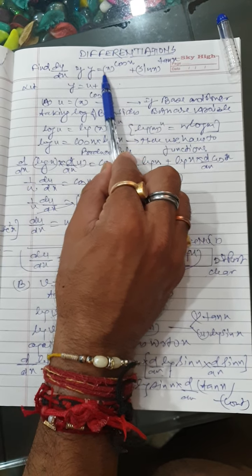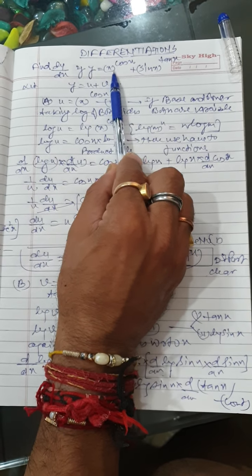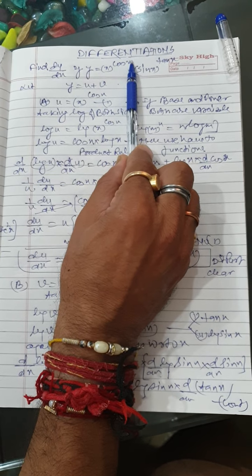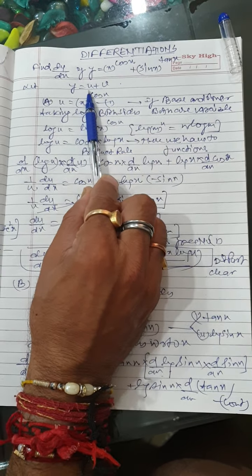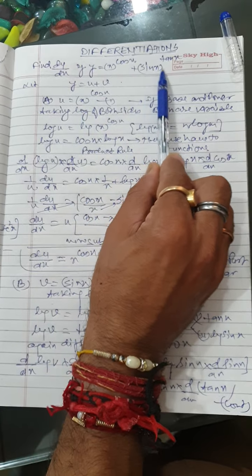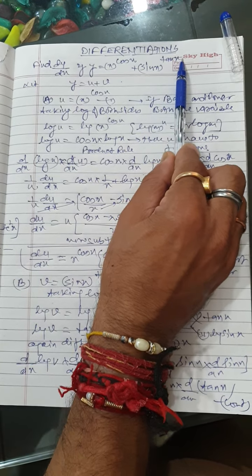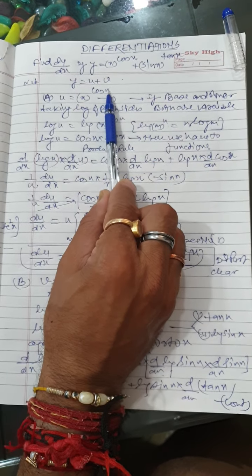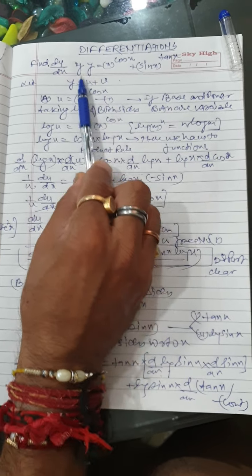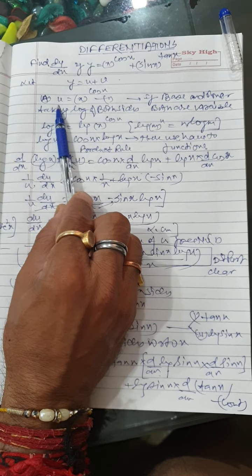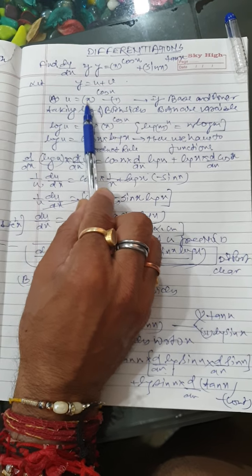Let x raised to the power cos x be taken as u and sine x raised to the power tan x be taken as v. First, I am going to solve for u. u is equal to x raised to the power cos x.